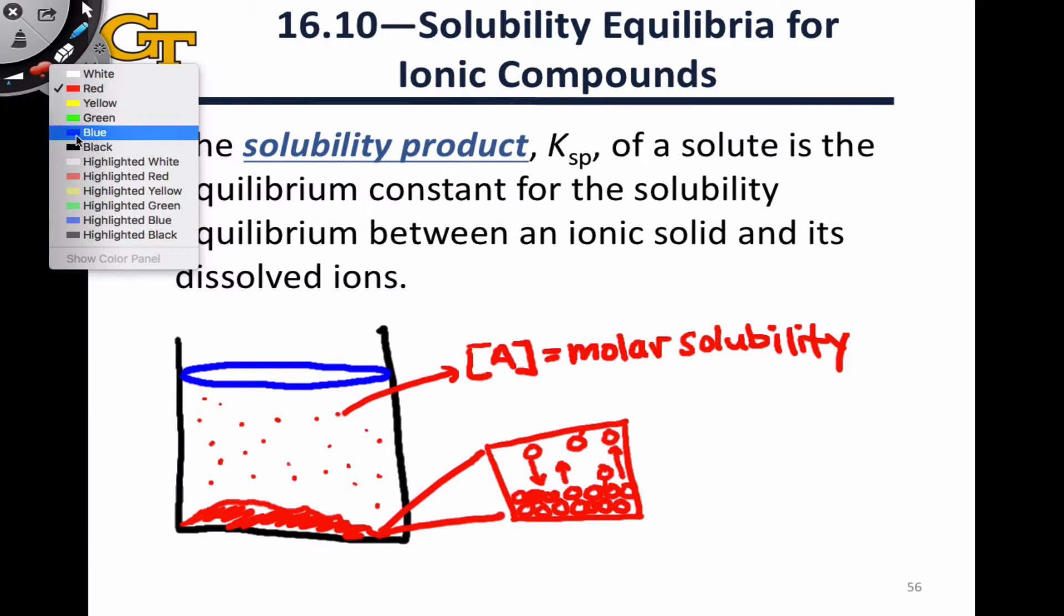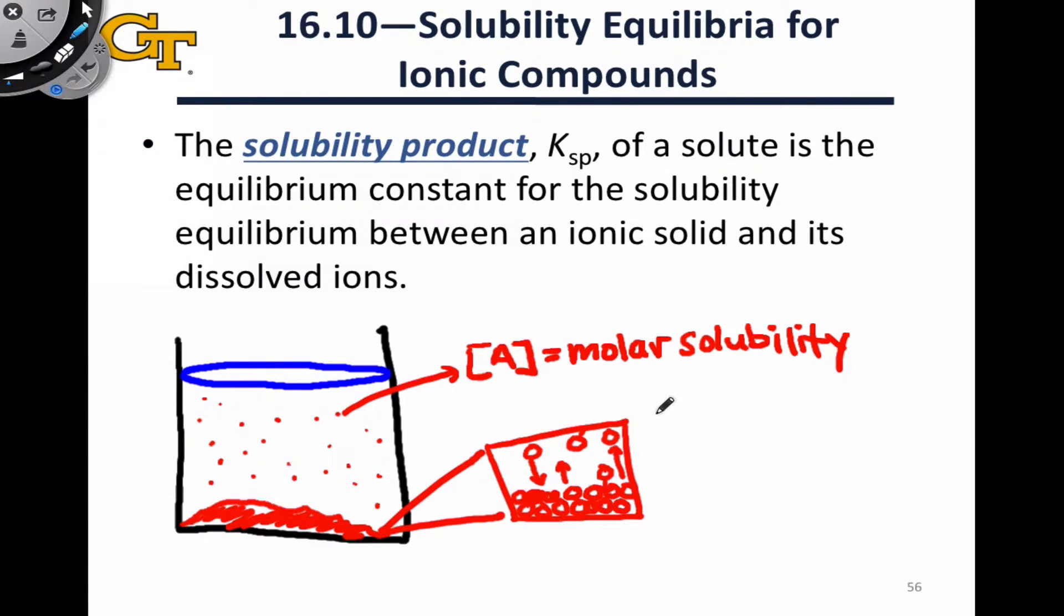And if we think in particular about an ionic solid, something that has, let's say, a metal cation and a non-metal anion, the process of dissolution and precipitation involves, on the dissolution direction, the solid dissociating into aqueous ions, let's say M plus aqueous and X minus aqueous, and in the reverse direction, the precipitation direction, M plus and X minus are getting together to form the MX solid.